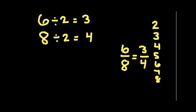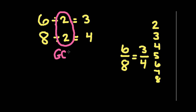We want to find the point at which there are no other numbers besides 1 that go into the remaining numbers. 3 and 4 have no common factors except 1, so we stop there. The GCF is just going to be the product of any numbers that you have divided out. In this case we've only divided out one number, so the greatest common factor is 2. If we had divided out more than one number, we would multiply those together.